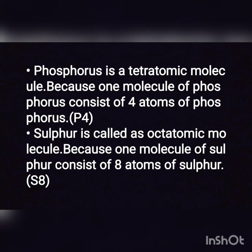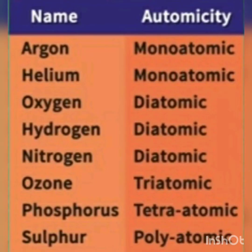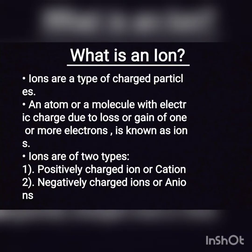Molecules of many elements such as argon, helium, neon, etc., are made up of only one atom; hence these molecules are called monoatomic molecules. Here is a list of elements with their atomicity: argon is monoatomic, helium is monoatomic, oxygen is diatomic, hydrogen is diatomic, nitrogen is diatomic. There are some more elements whose atomicity we need to learn.